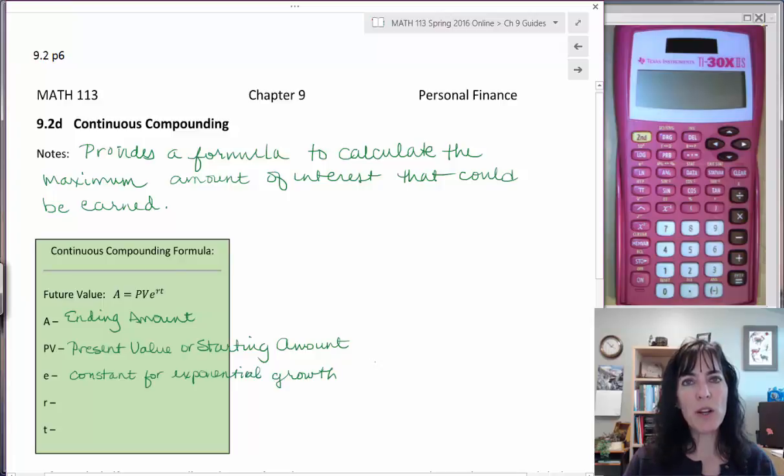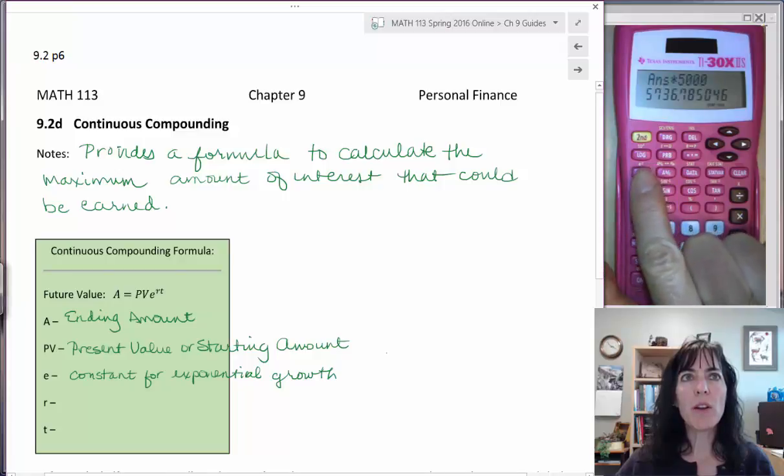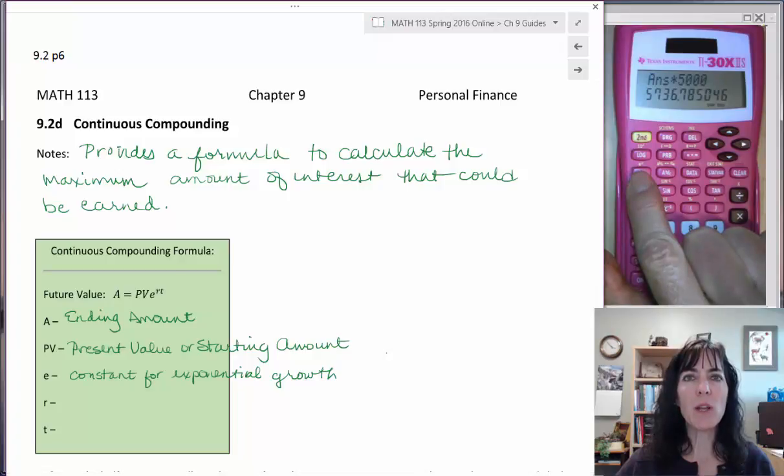And if we look at that on our calculator, which we'll do here, it can be found right there. It looks like e to the x. And if we want to see the value of e, then we can look at e to the first. Just like 2 to the first is 2, e to the first will give you the value for e.